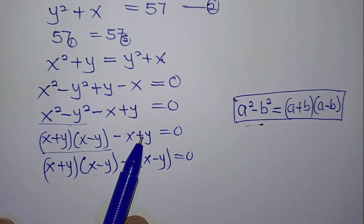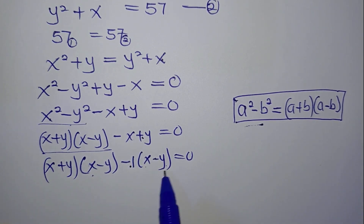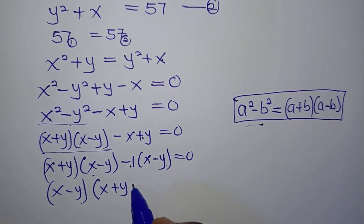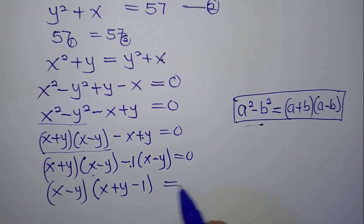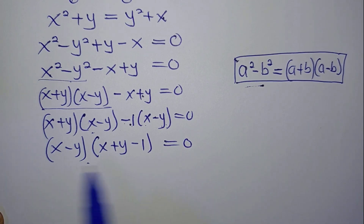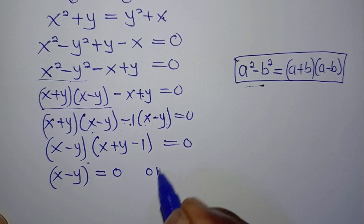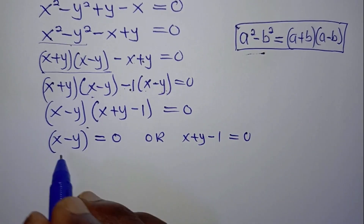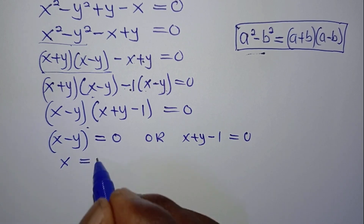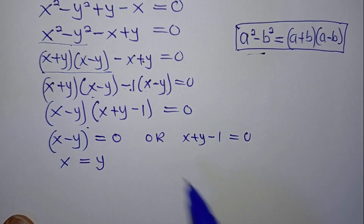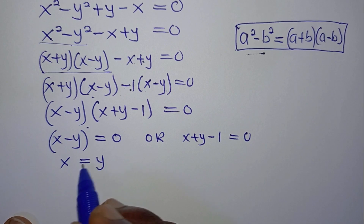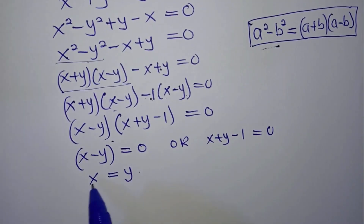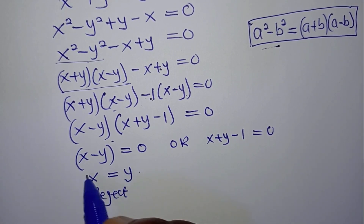So x minus y is common to both terms, so we take (x − y) outside and we are left with (x + y − 1). This equals zero. So we apply the zero product rule: x minus y equals zero, or x plus y minus one equals zero. From the first factor, x equals y. But remember, the condition of the question already stated that x should not equal y, so we reject this solution.